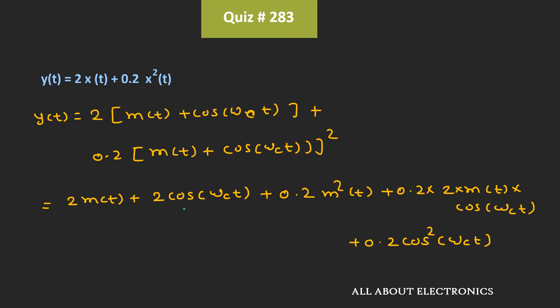So here, these two terms represent the AM signal. That is equal to 2cos(ωct) plus 0.4 times m(t) times cos(ωct).